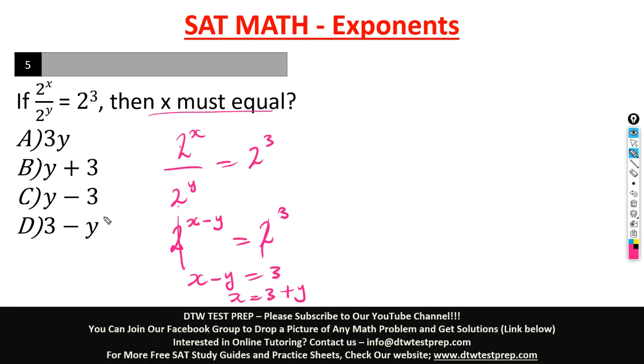You don't see 3 plus y in the answer choices, so don't get confused. 3 plus y is the same as y plus 3. They're both positive. So you can write it as y plus 3, and our right answer here is B.